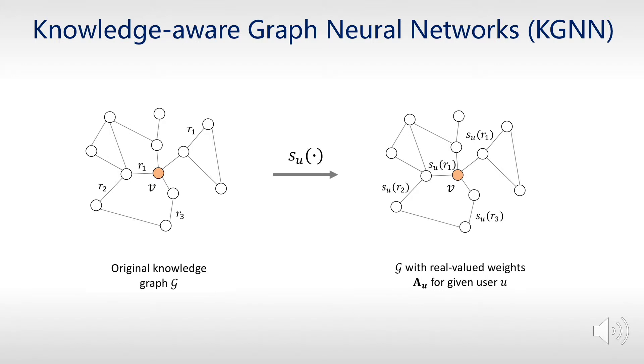In this relation scoring function, U and R are feature vectors of user U and relation type R, respectively, and G is a differentiable function such as inner product.